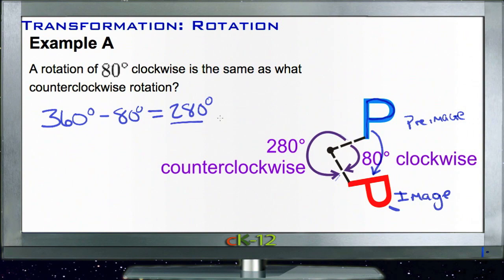So that 280 degrees is the amount we'd have to go in the other direction to get to the same location. So we can either rotate clockwise 80 degrees or counterclockwise 280 degrees and we'll get to the same point.